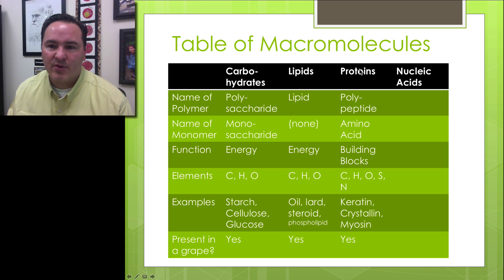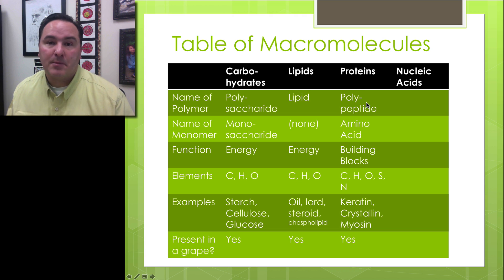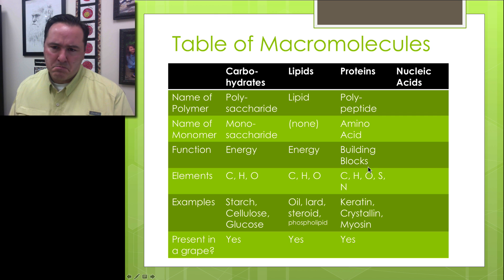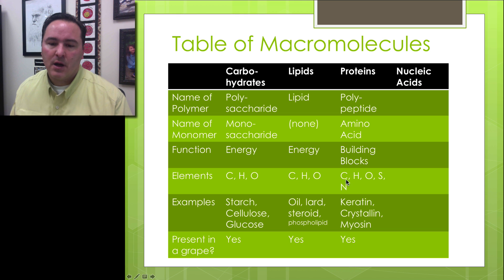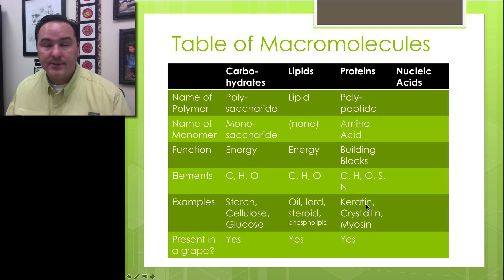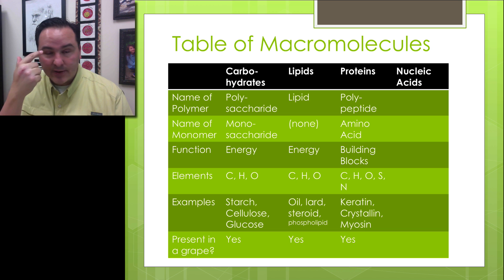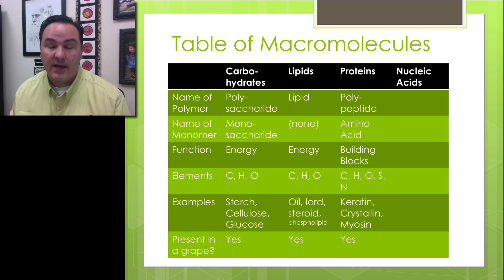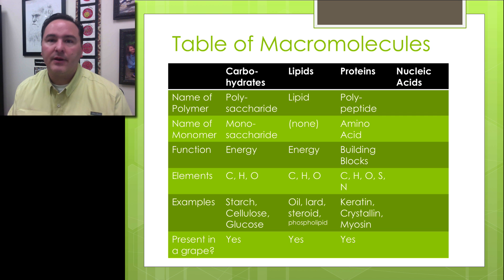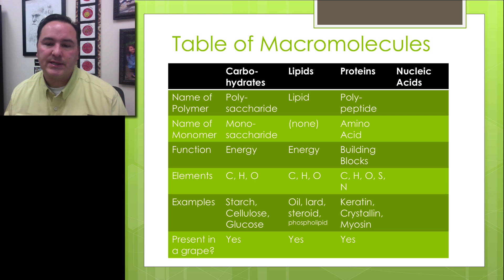We can now fill out the proteins table: the polymer name is polypeptide, which becomes a protein, and the monomers are all the amino acids. Proteins are involved in building blocks, but also in enzymatic activity, helping with reactions in the body. The elements are carbon, hydrogen, oxygen, sulfur, and nitrogen. Examples include keratin, found in hair and nails; crystallins, found in eye lenses; and myosin, a muscle protein involved in contraction. In humans, we have over 200,000 different kinds of proteins.